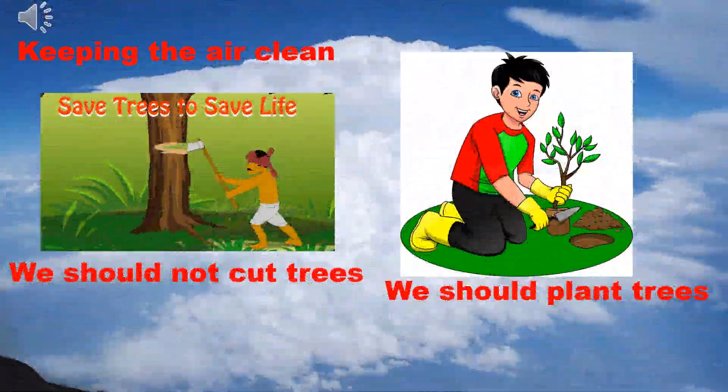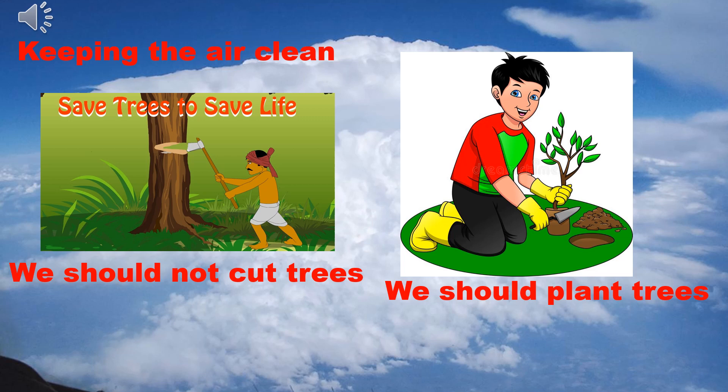Now, turn to page 60. It says: keeping the air clean. How can you keep air clean? We can reduce air pollution by planting more and more trees around us. We should not cut down trees, because trees give us clean, fresh air and oxygen. Plants make the air clean. Playing in fresh air is healthy.